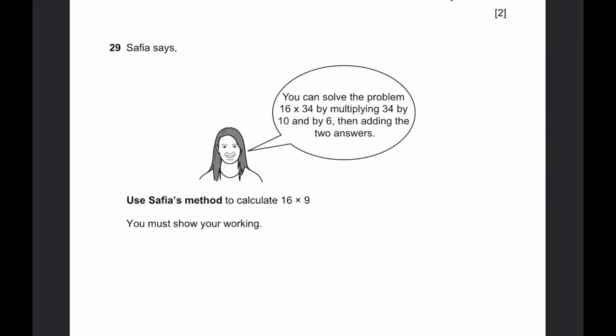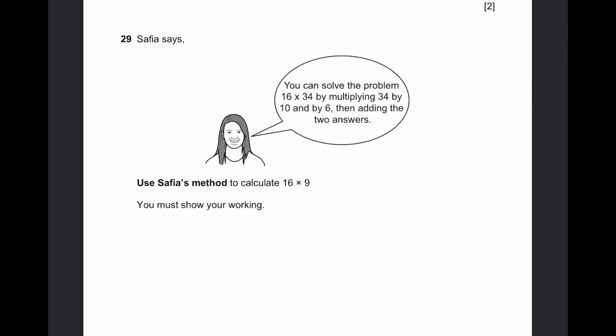Question 29. Safia says, you can solve the problem 16 into 34 by multiplying 34 by 6 and then adding the two answers. Use Safia's method to calculate 16 into 9. You must show your working. So 16 into 9 is equal to, using Safia's method, 10 into 9 plus 6 into 9. That'll be equal to 90 plus 54. That's equal to 144. That's the answer.